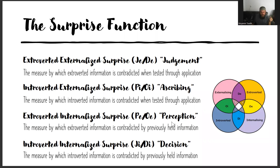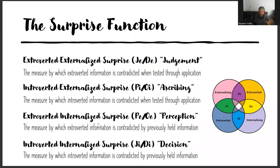Extroverted internalized surprise is a perception — it's the measure by which extroverted information is contradicted by previously held information. And introverted is the measure by which introverted information is contradicted by previously held information. That's where you make your decision. You have introverted information, it's contradicted by previously held information, you have to make a decision: do you throw out your previously held information? Do you update it? Do you merge? You really have to make a decision here. With a perception, you don't have to make a decision — you have extroverted information being contradicted by previously held information, and you're like, okay, let me just perceive it. I don't have to reduce its entropy. I can leave it as high entropy and wait to reduce it.